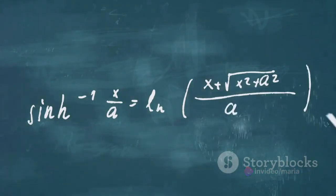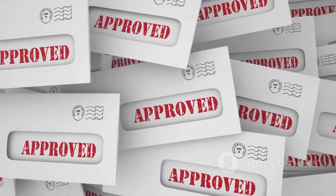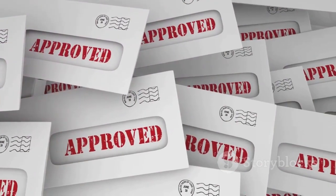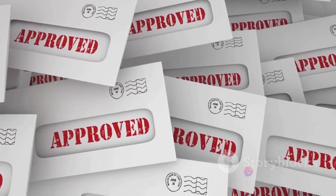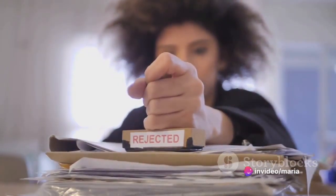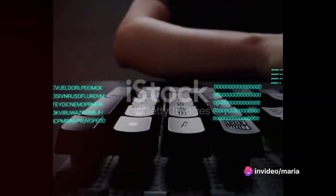These output values represent probabilities. If a data point gets a probability closer to one, the gatekeeper tags it as accepted. If it's closer to zero, then it's tagged as rejected.